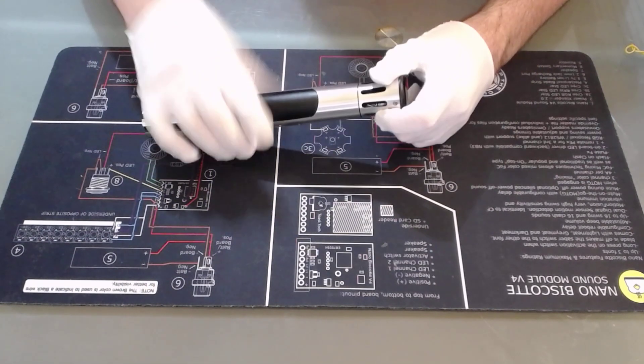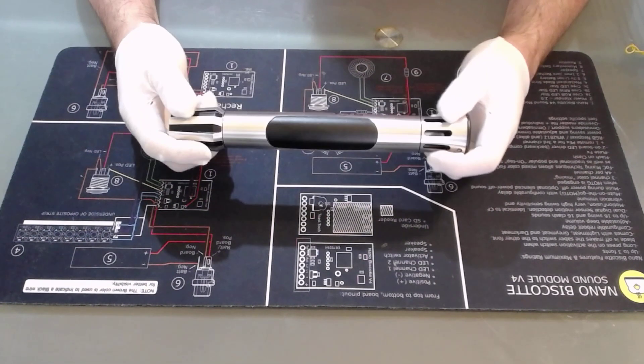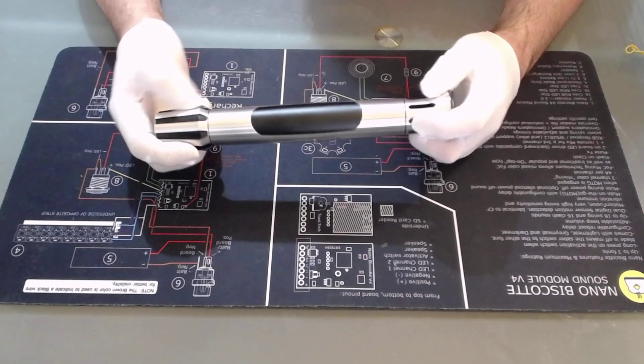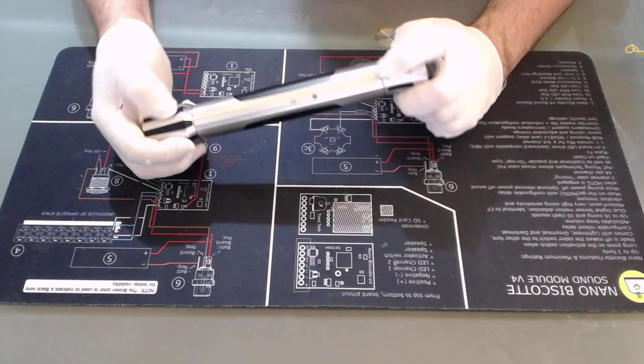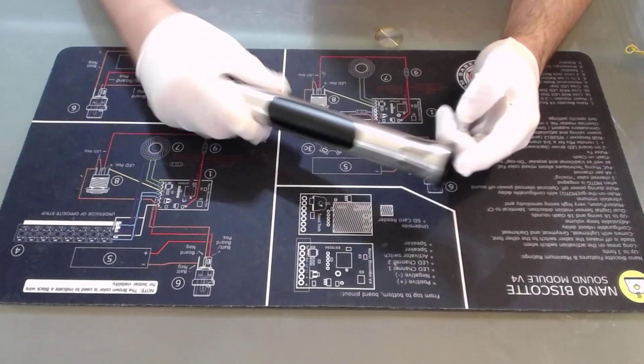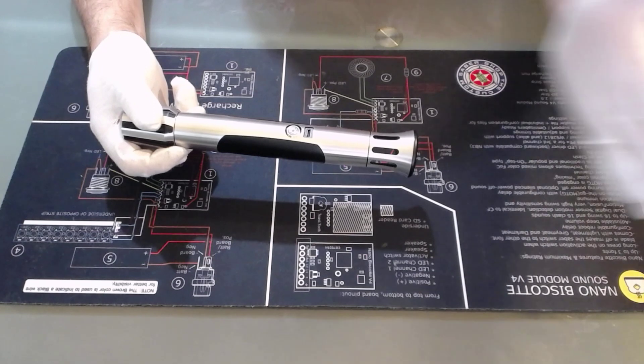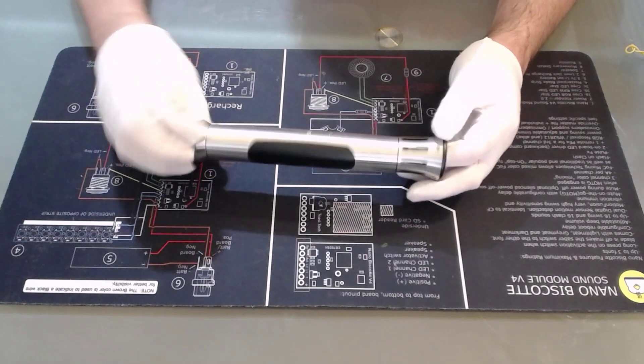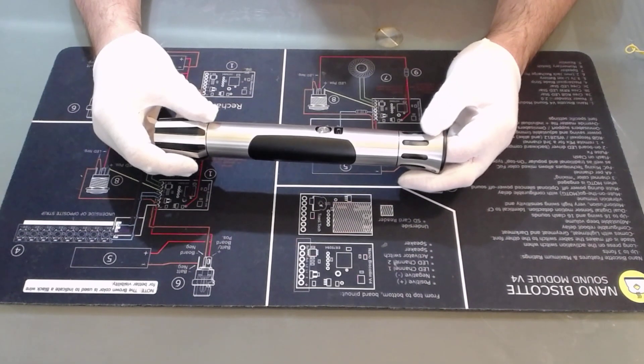Anyway, albeit all of our sabers do ship with heavy grade blades as standard, just to let you know that there is that option for putting a mid-grade in there with the three retention screws. And of course, that just makes it a little bit easier to handle for single-handed use.